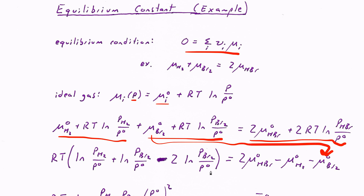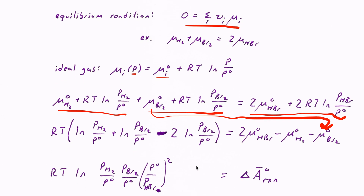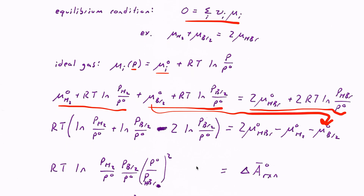On the left side of the equation I collect all the RT·log terms: RT·log(P(H₂)/P°) and RT·log(P(Br₂)/P°). When I bring the product term over to the left-hand side it gets a negative sign, so I have minus twice RT·log(P(HBr)/P°). Now I've collected all the pressure-dependent terms on the left side and all the standard state chemical potentials on the right side.